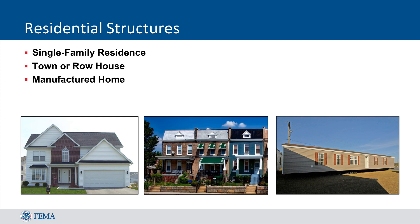Residential structures can generally be broken down into just three different types: single-family residences, town or row houses, and manufactured homes. Although there are other types that may be selected when performing assessments, these three are the most common and cover a majority of the structures that will be evaluated in the field in the United States. One common misconception relates to modular or prefabricated homes that have been built off-site and then trucked in and placed on a site. Since they are built off-site, it is easy to confuse these as manufactured homes, but these types of structures should be considered single-family residences since their design is closer in type to single-family construction.